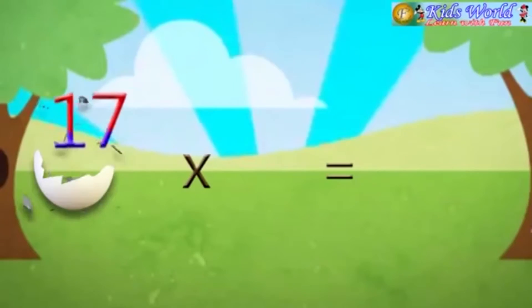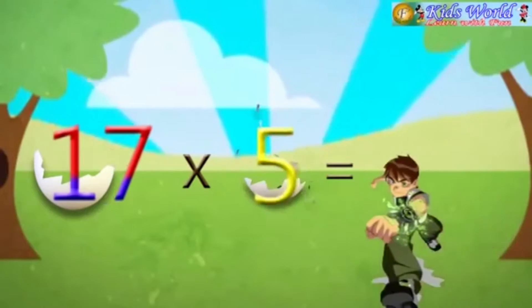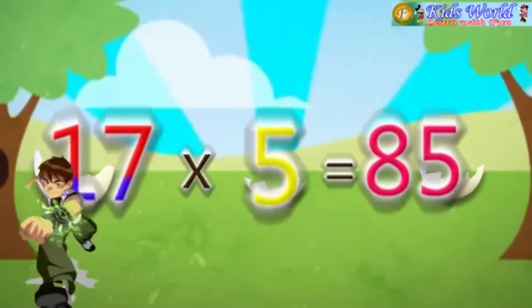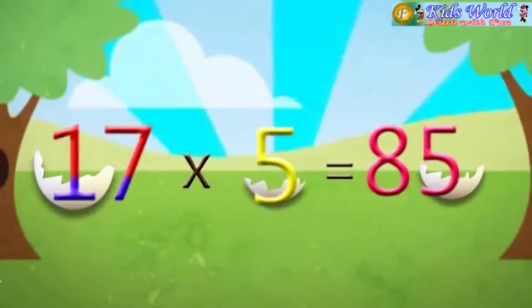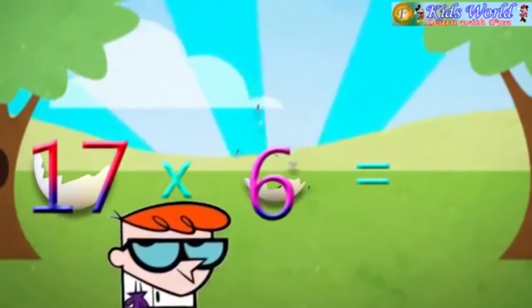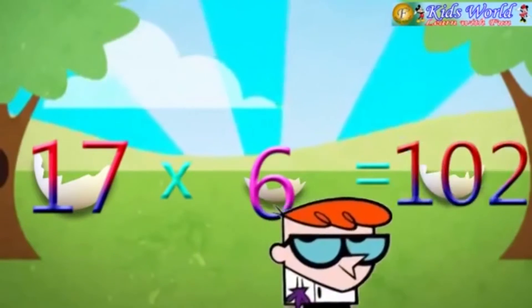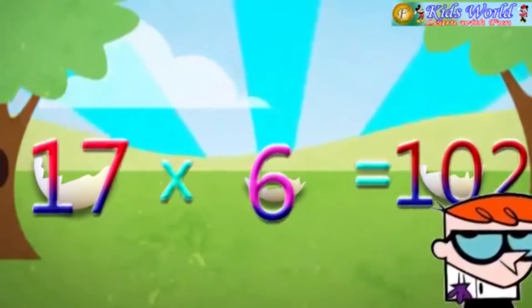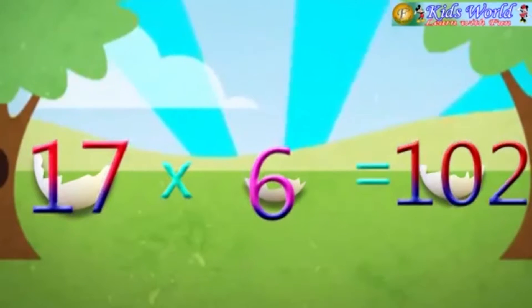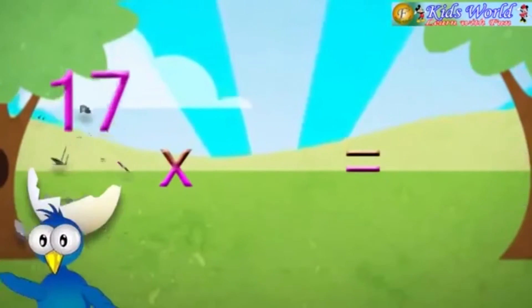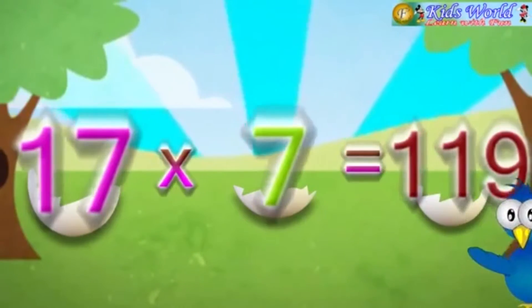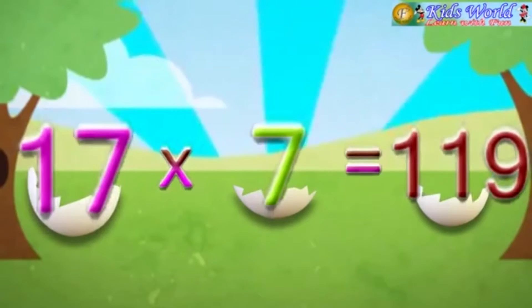17 into 5 is equal to 85. 17 into 6 is equal to 102. 17 into 7 is equal to 119.